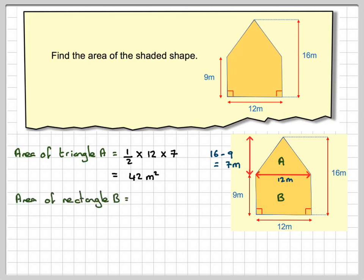And the area of this rectangle here will be 12 times 9, which will give me 108 meters squared. To find the total area we will need to add them together, so it'll be 42 plus 108, which is equal to 150 meters squared.